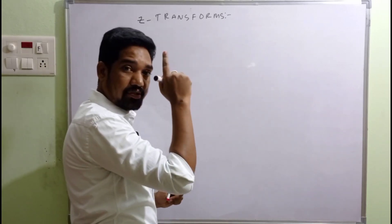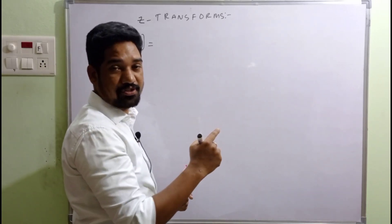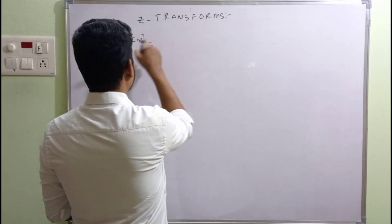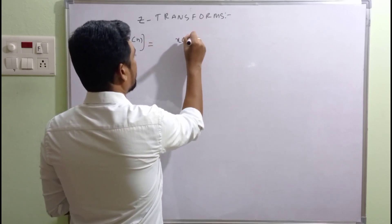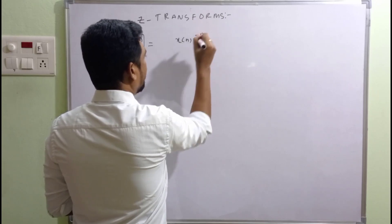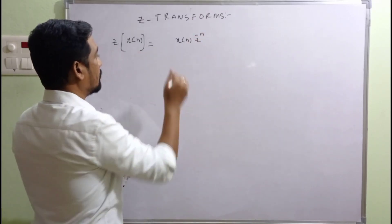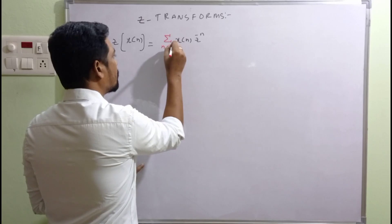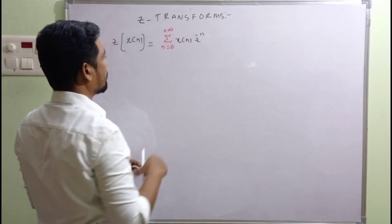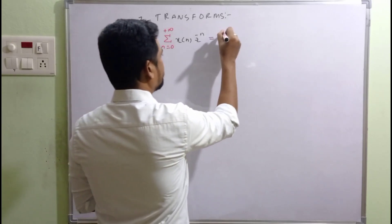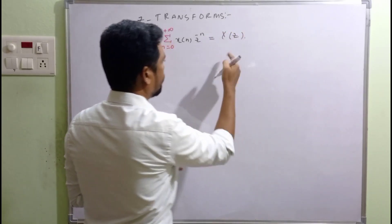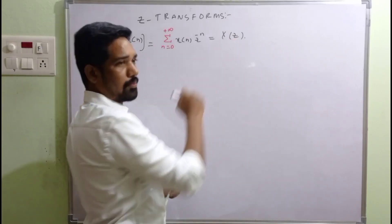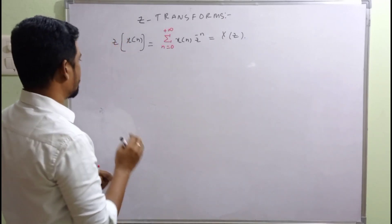For a unilateral Z-transform, the summation runs from n equal to 0 to positive infinity, giving us X(Z). The notation transforms the time-domain signal in the n-domain to the Z-domain.